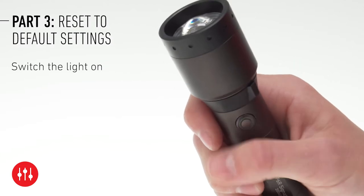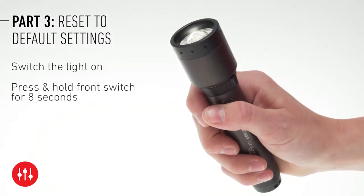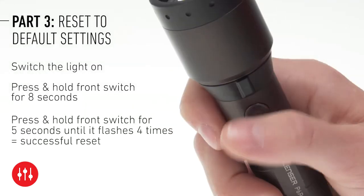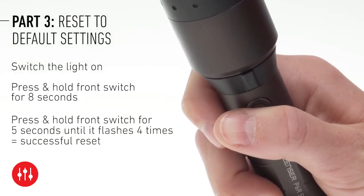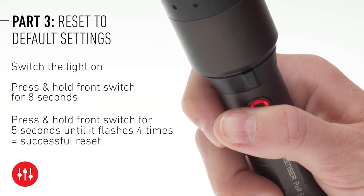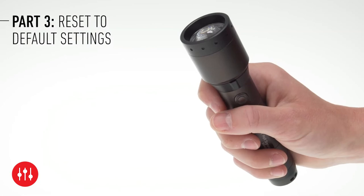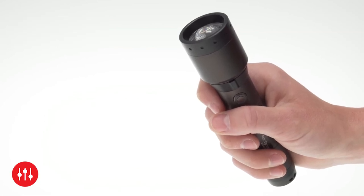Switch the light on. Then press and hold the switch for 8 seconds. Let go briefly and press and hold the switch again for 5 seconds until it flashes 4 times. The light has now been successfully reset to the factory settings. Have fun with your LED Lenser portable light.